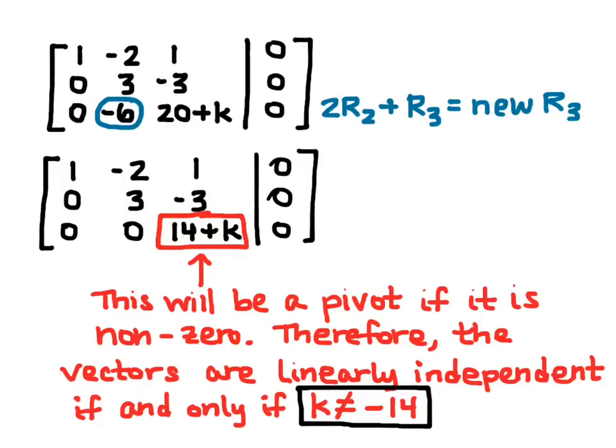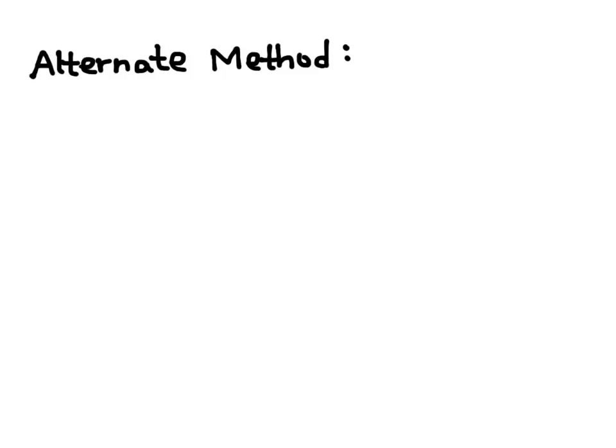Now I want to show you one alternate method for doing this problem, and that would be to assume that they're dependent and find what K would have to be to make them dependent.